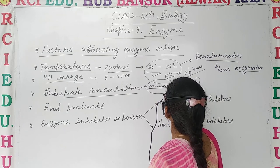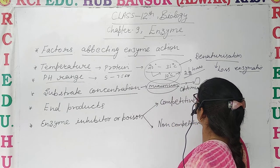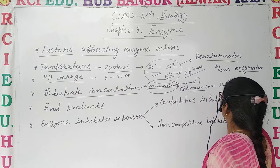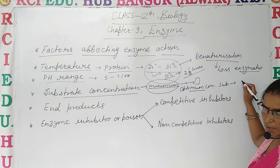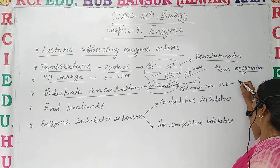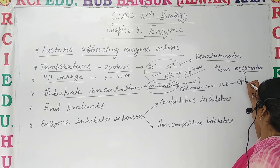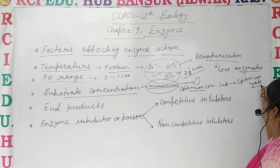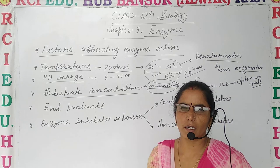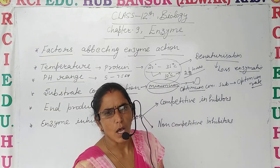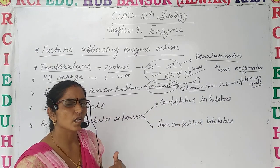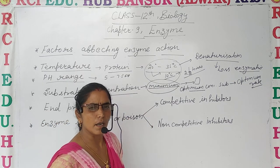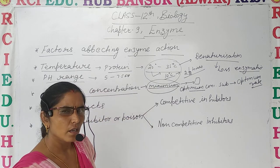The second condition is optimum concentration of substrate. Optimum substrate concentration can enhance enzymatic activity and enzymes can perform at their optimum rate. This is because the number of enzyme molecules matches the number of substrate molecules, so they directly enhance the rate of enzymatic activity.